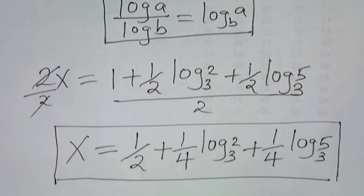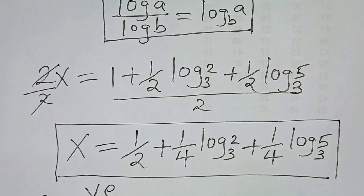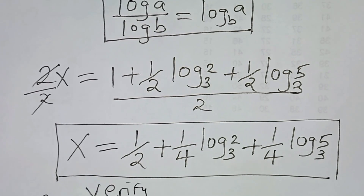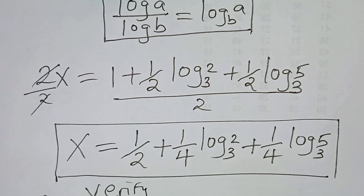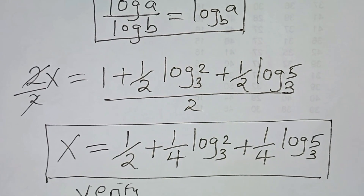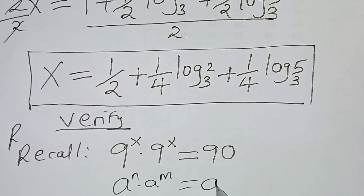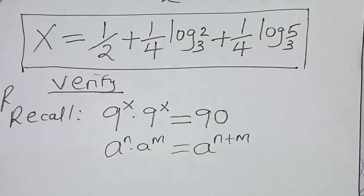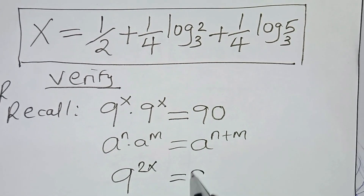So let's verify that this value of x actually satisfies the equation. We need to confirm that 9 to the power x times 9 to the power x gives us 90. Using the exponent addition rule, this is 9 to the power 2x, which should equal 90.